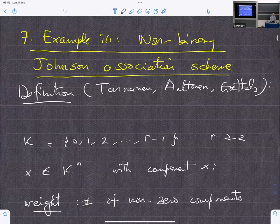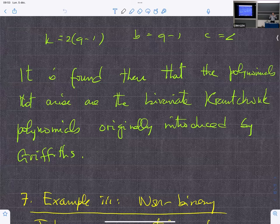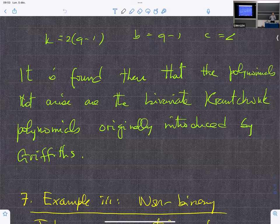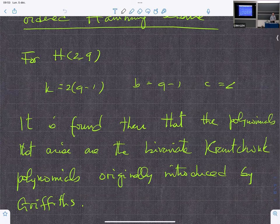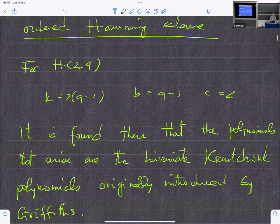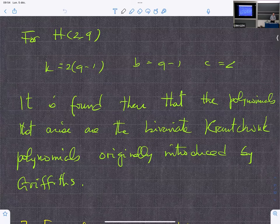I will skip. So then you can look at other interesting situations. There's something that generalizes. You know, there are two very famous schemes: the Hamming scheme and the Johnson scheme.